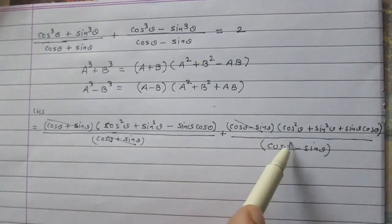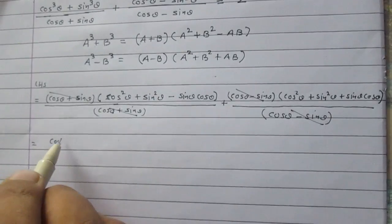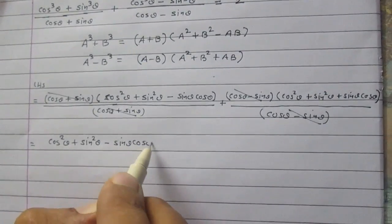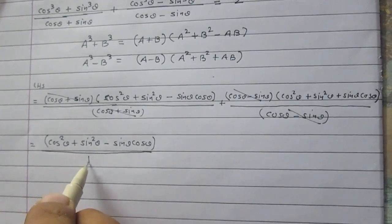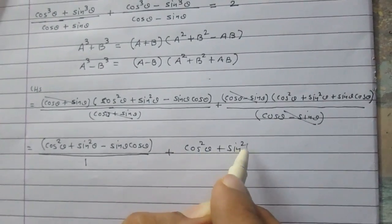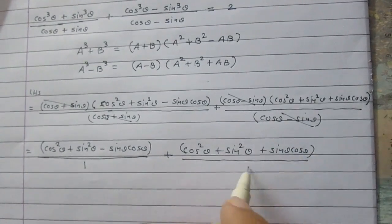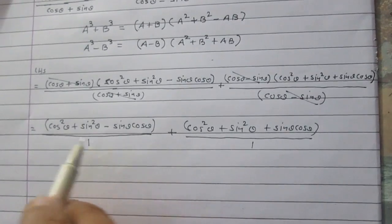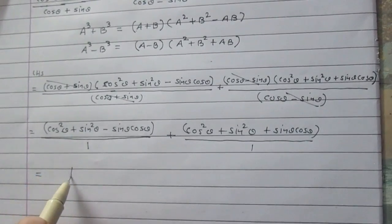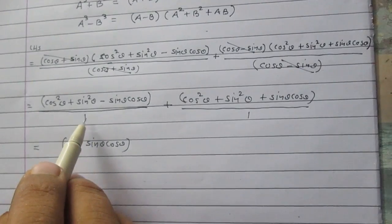The cos theta plus sine theta terms cancel each other, and cos theta minus sine theta terms also cancel each other. We are left with cos squared theta plus sine squared theta minus sine theta cos theta, whole divided by one, plus cos squared theta plus sine squared theta plus sine theta cos theta divided by one. According to trigonometric identities, cos squared theta plus sine squared theta equals one, so each group simplifies to one minus sine theta cos theta and one plus sine theta cos theta.